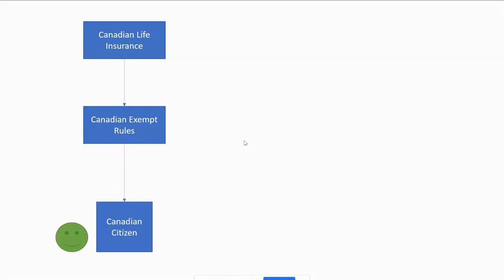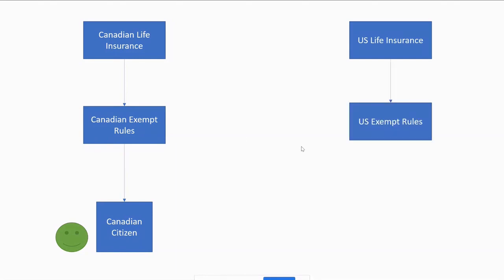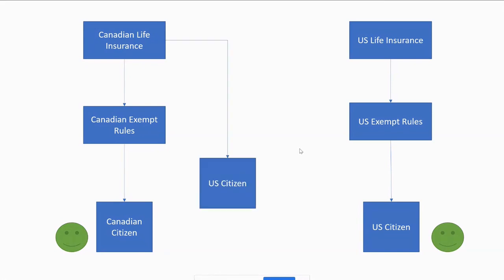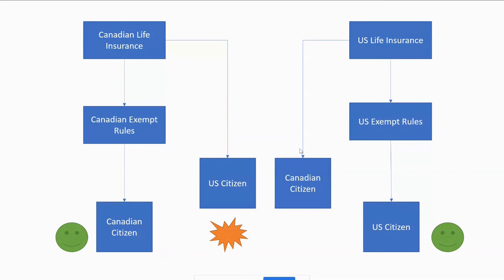Where things get really muddy is when that US citizen owns Canadian life insurance or vice versa — the Canadian citizen owns US life insurance. Some undesirable consequences can happen through that. There's actually an exploding landmine image in the diagram attached to the US person owning Canadian life insurance scenario.